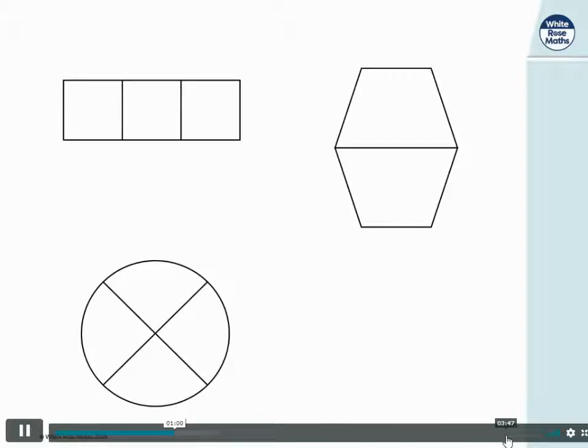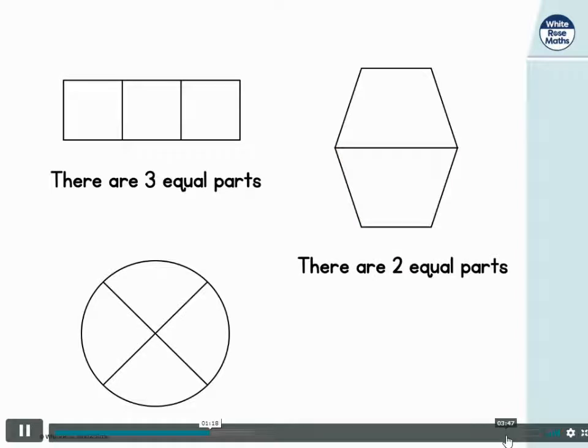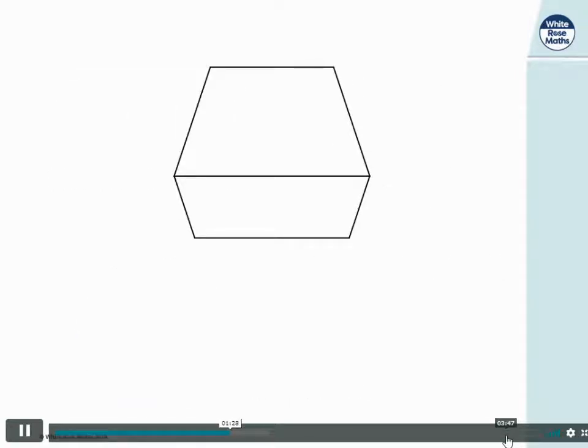In this section we're looking at equal parts. Our first shape has one, two, three equal parts. Our second shape, that's one, two equal parts, and our circle has been split into four equal parts. Look at this shape, does this have equal parts? We've got one part at the top but when I flip it over it's bigger than the part at the bottom, so it's not equal. In fact, it is unequal. We have two unequal parts.